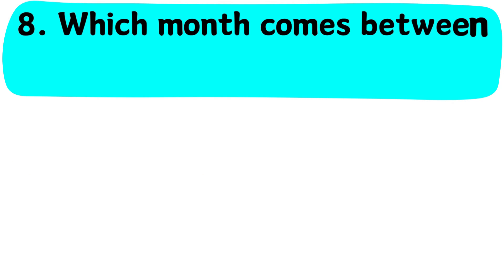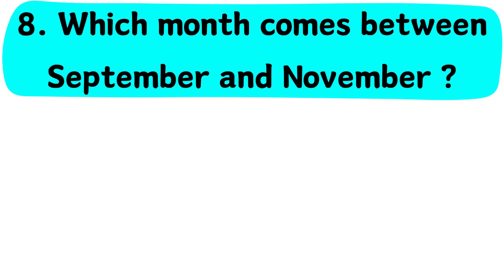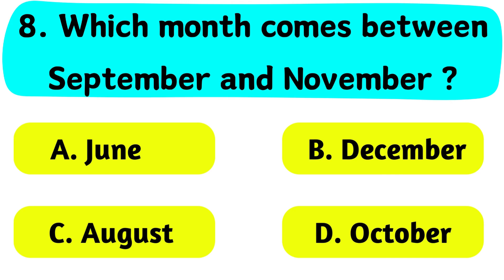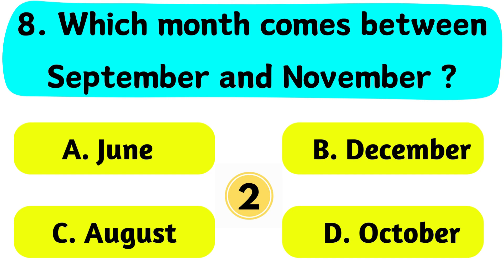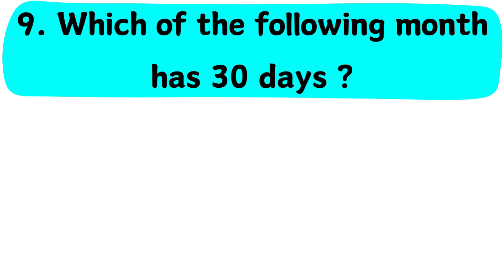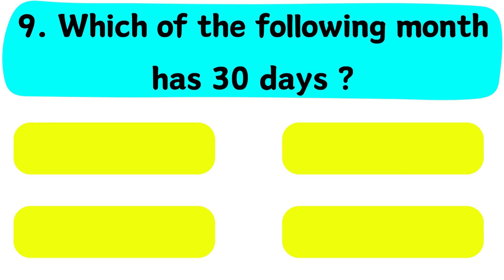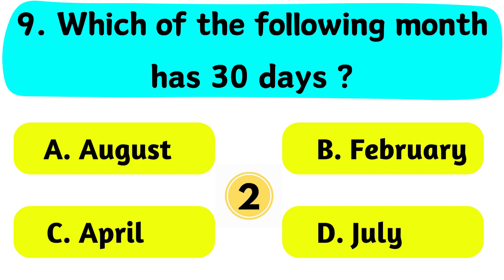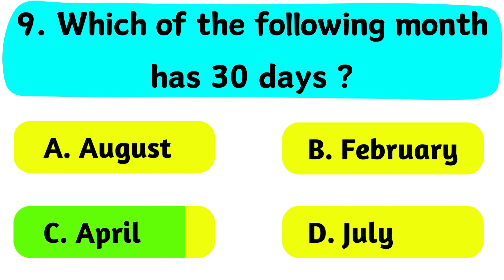Question No. 9. Which of the following months has 30 days? A. August, B. February, C. April, D. July. The correct answer is Option C. April.